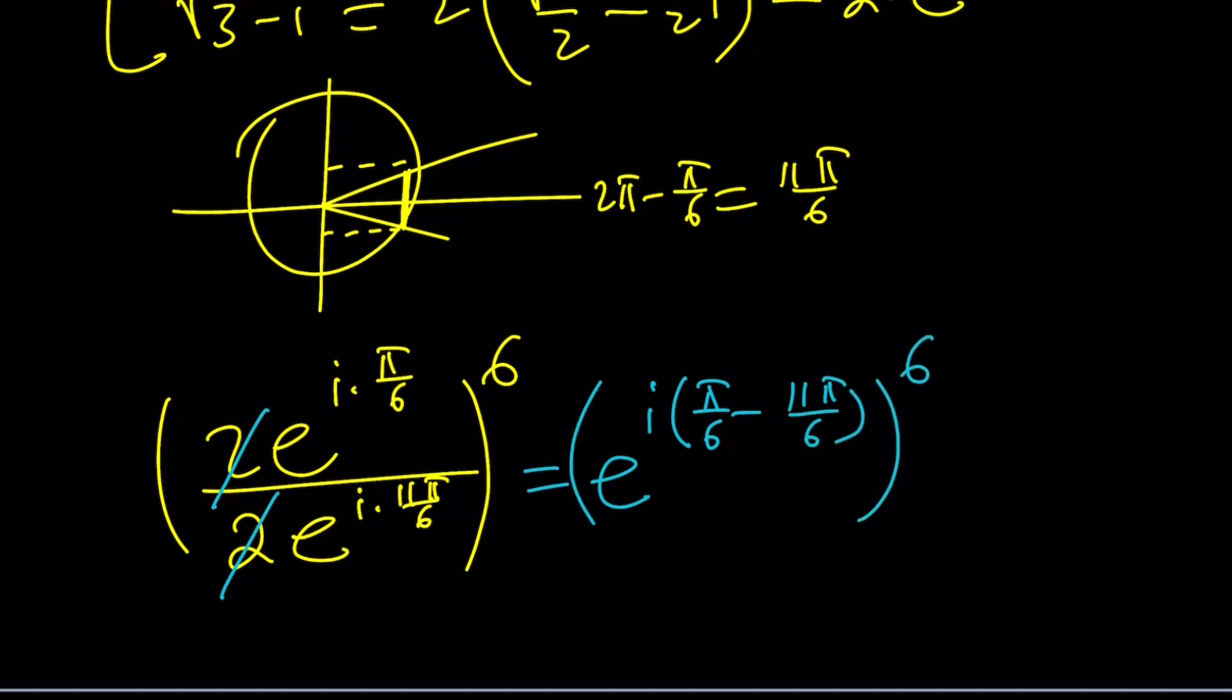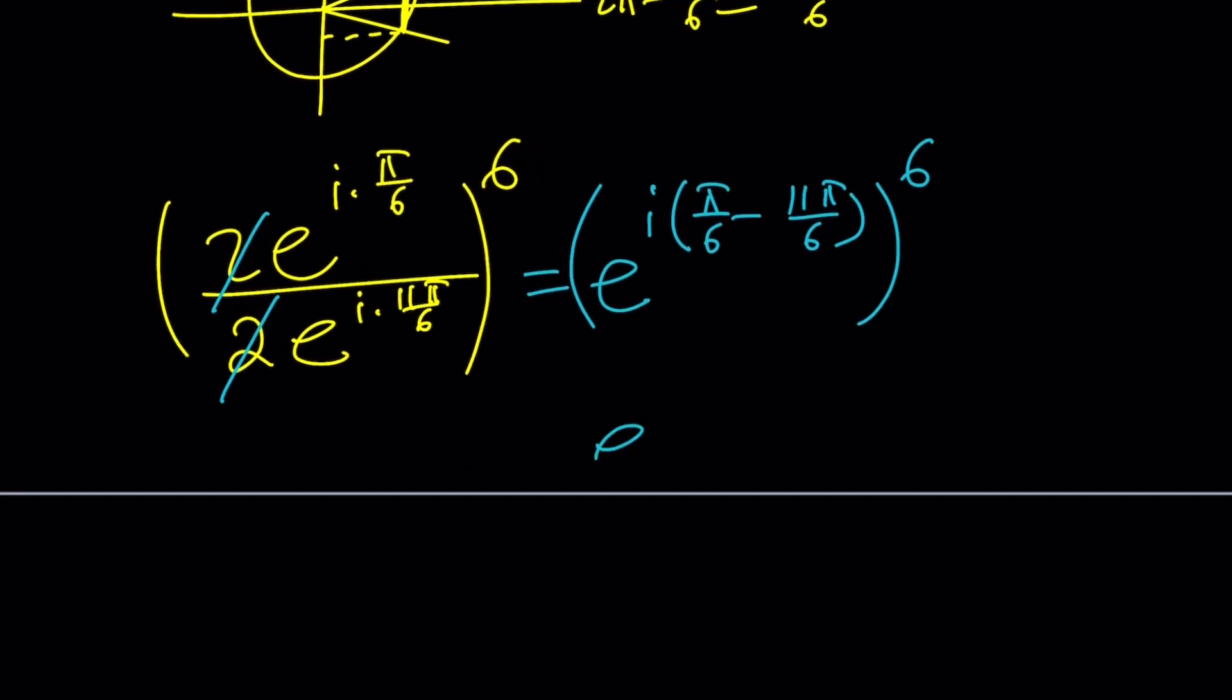But guess what? You can kind of make a common denominator or just multiply by 6. It should give you e to the power i times pi minus 11 pi. And that should be negative 10 pi. And that should be the same as 2 pi. Why? Because it's a multiple of 2 pi.